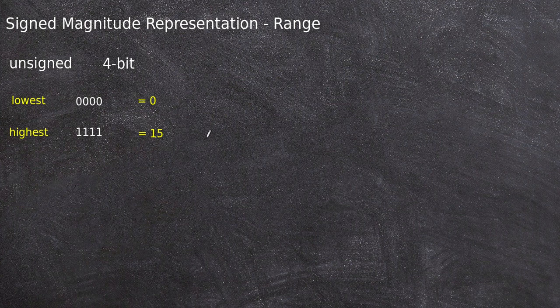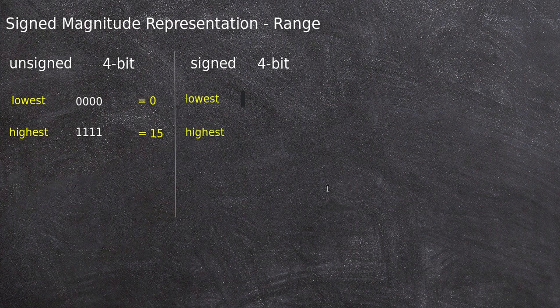But the case is different when it is signed magnitude representation, because we need one extra bit to represent the sign. If it is signed magnitude representation and we use 4 bits, then the sign bit changes things. Let us see what is the lowest number possible here.